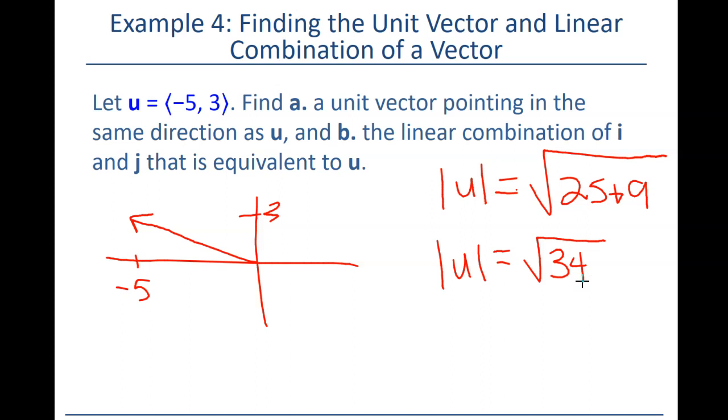And so right now our vector has a magnitude of 25 plus 9 is 34. All right, and that breaks down to 2 and 17, so we can't simplify that anymore. But the big point is its magnitude is bigger than 5, almost 6. Unit vector means magnitude 1. We want the magnitude to be 1.